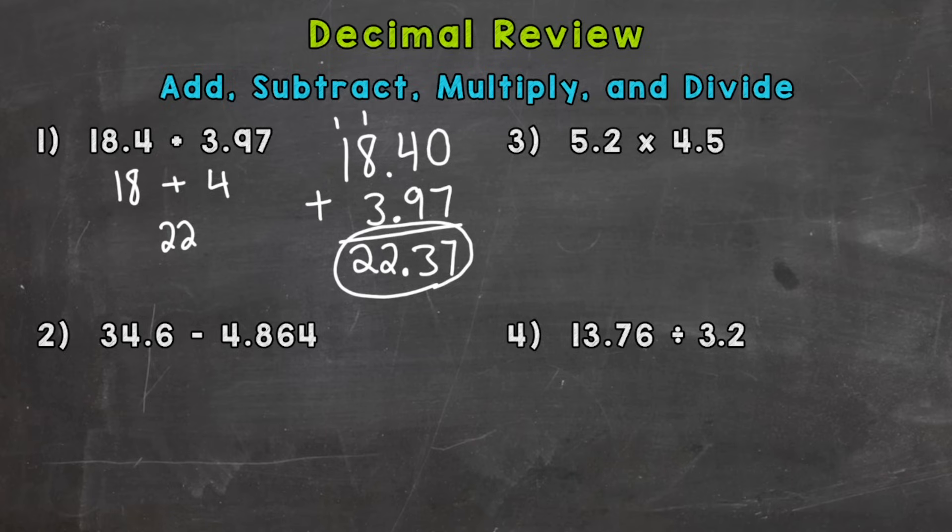So let's take a look at number 2. Again, adding and subtracting the most important thing, line your decimals up. So here we have 34.6 minus 4.864. Now that problem looks even more offset than the first one. That's okay because we lined our decimals up, the most important part. And when you line your decimals up, it lines all of your places up. So now we need a couple of placeholder zeros. Now we're all lined up and we have our placeholder zeros.